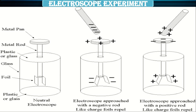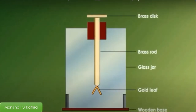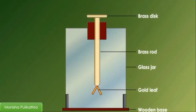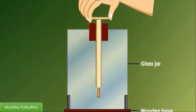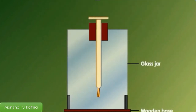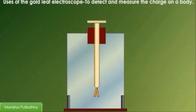Coming to one of the most important experiments of today's session — the electroscope experiment. The diagram shown here is the setup. The gold leaf electroscope consists of a brass rod with a brass disc at the top and two gold leaf strips of cut metal foil at the other end. The rod is inserted through a rubber or plastic stopper into a glass container. The tin foil inside and the wooden base make the electroscope more effective. The gold leaf electroscope is used to detect and measure the charge on a body.